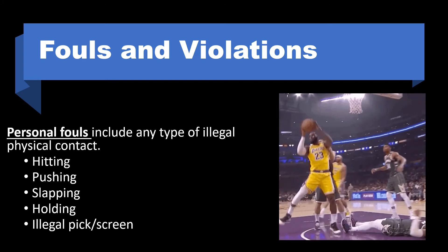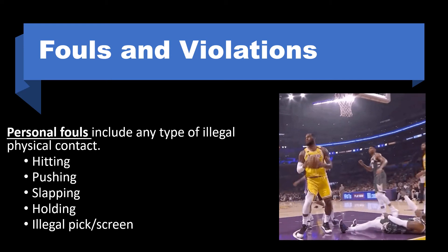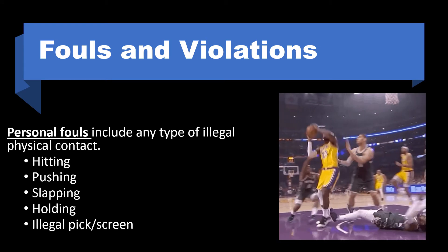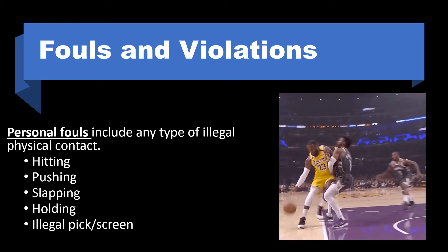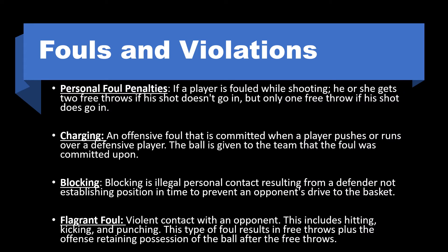Fouls and violations: personal fouls include any type of illegal physical contact — hitting, pushing, slapping, holding, or an illegal pick or screen. Personal foul penalties: if a player is fouled while shooting, he or she gets two free throws if the shot doesn't go in, but only one free throw if the shot does go in. Charging is an offensive foul committed when a player pushes or runs over a defensive player; the ball is given to the team that the foul was committed upon.